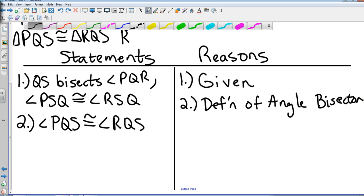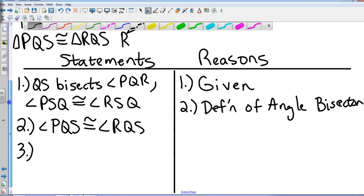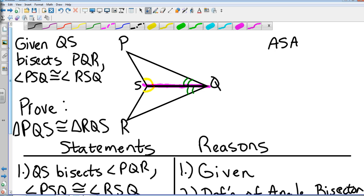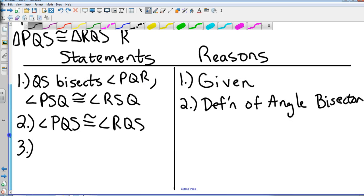And that is by definition of an angle bisector. By definition of an angle bisector.